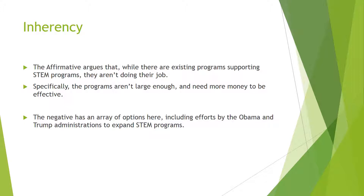First, let's talk about inherency. The affirmative argues, in this case, that while there are existing programs to support STEM, they are not doing their job. Specifically, these programs aren't big enough and need more money to be effective. The negative has an array of options here, including efforts by the Obama and Trump administrations to expand STEM programs in the status quo.